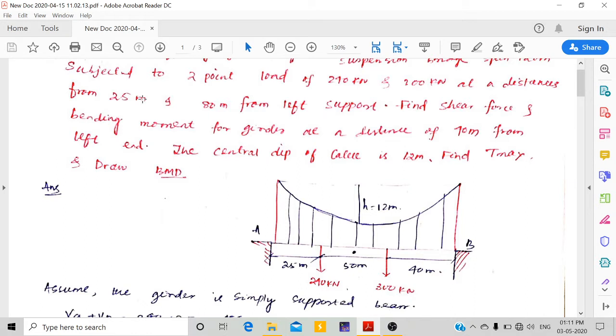T_max means we have to find the maximum tensile force which is obviously acting at the supports at this point, here and here. The total span is 120 meters. The central dip from here to the left side is 60 meters, and from here to here is 60 meters. The central dip is 12 meters. A 240 kN load is applied at 25 meters from the left support, and 300 kN is acting at 80 meters distance.